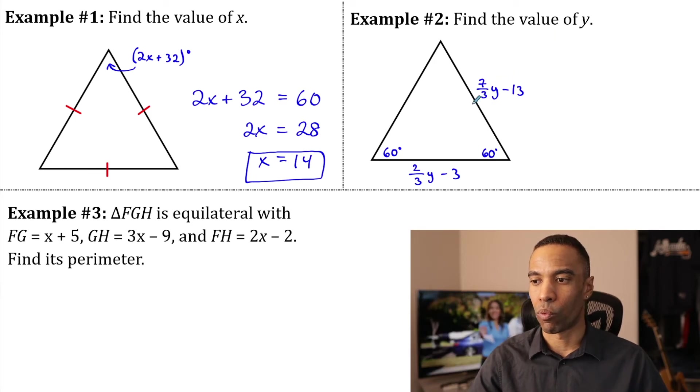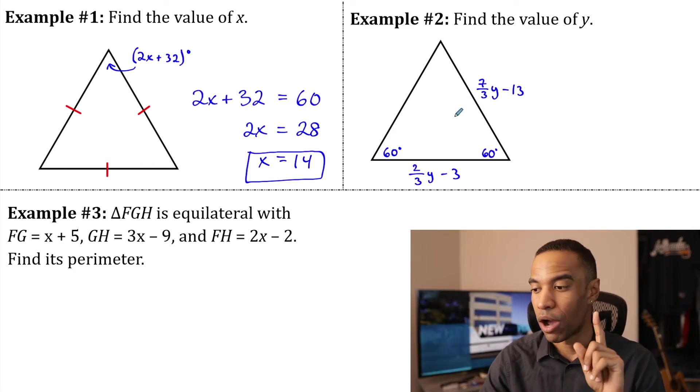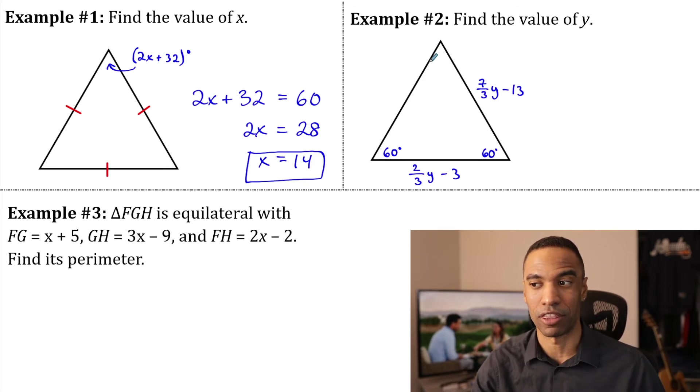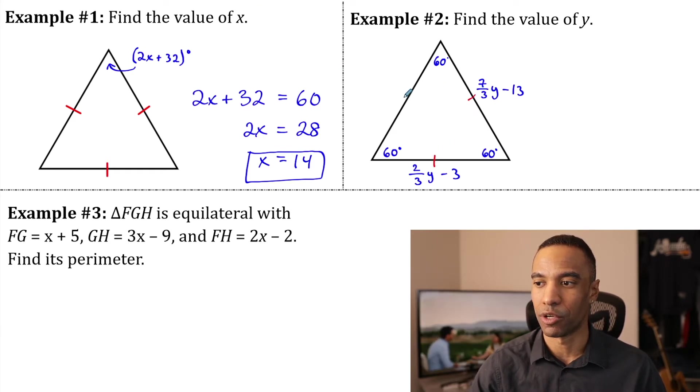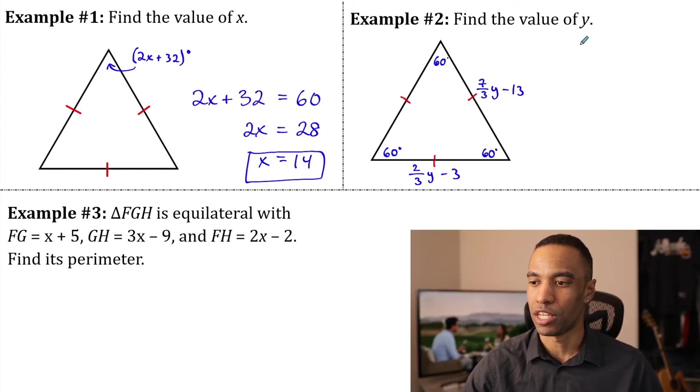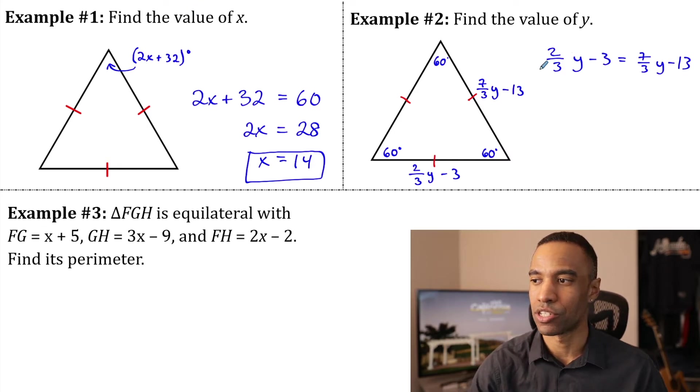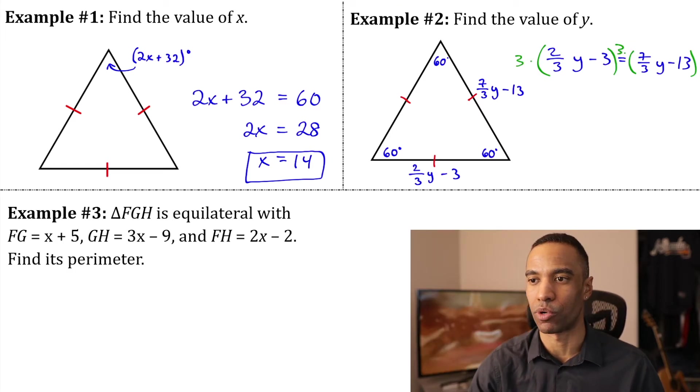Example number two, find the value of Y. In this case here, I see a 60 and 60. Must be an isosceles triangle. However, this goes even further than that because, just like the last one, everything being 60 degrees, two of these are 60. The only way that's possible is if that third one's 60 as well. This must be an equiangular triangle. And what do equiangular triangles have? All sides congruent because equiangular are equilateral. That means these two are also equal to each other. Two-thirds Y minus three equals seven-thirds Y minus 13. Fractions, not a problem.